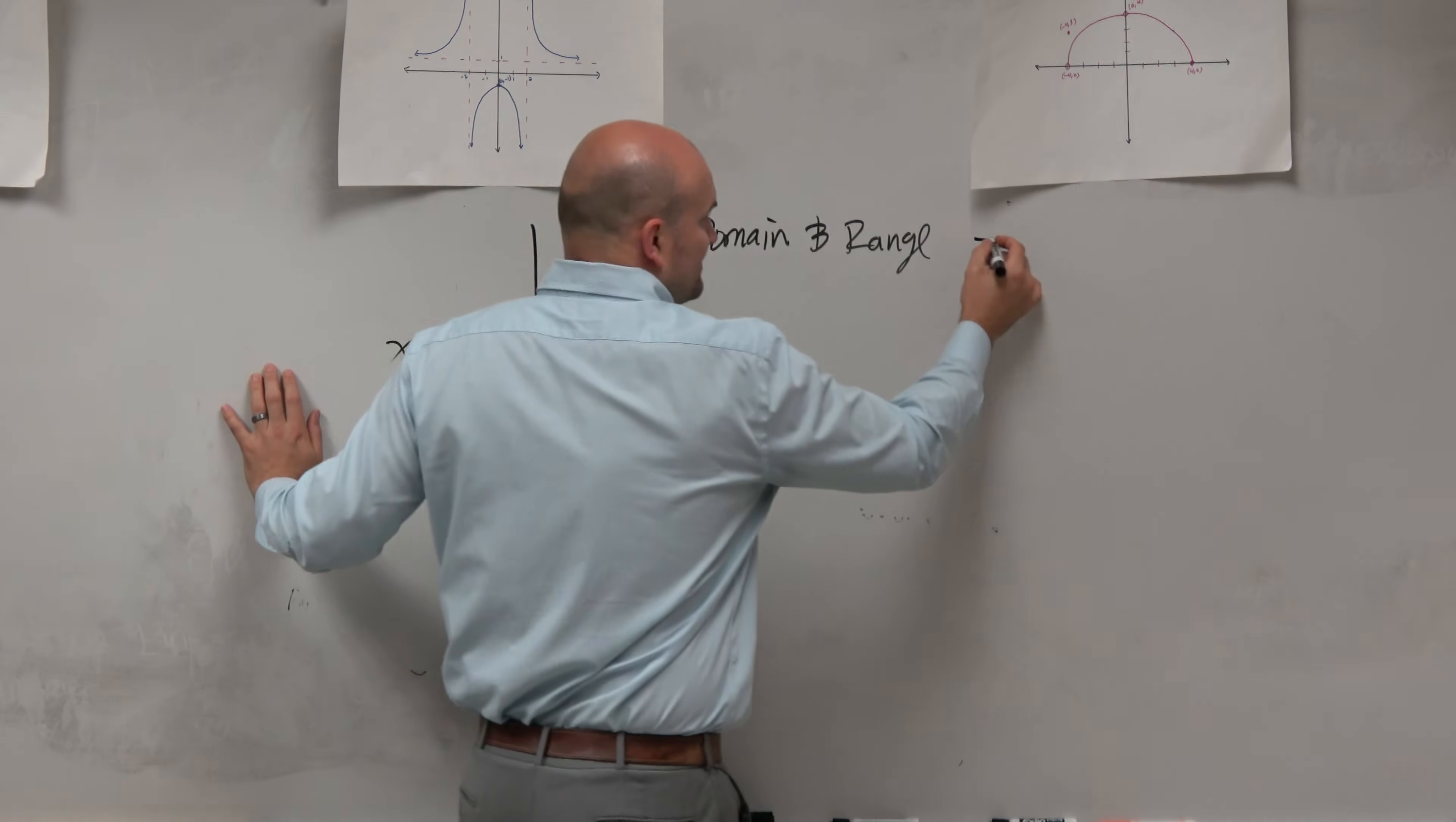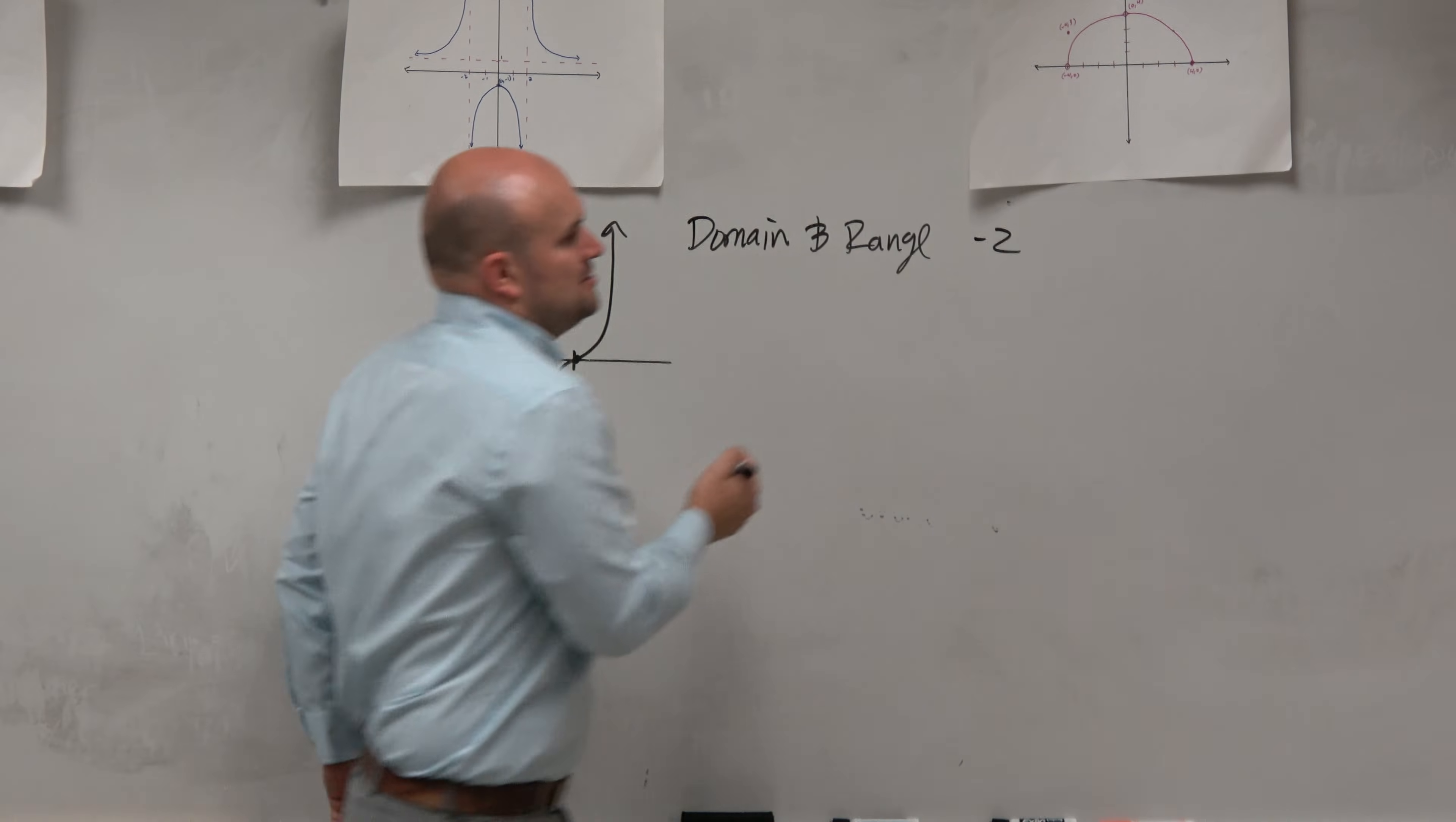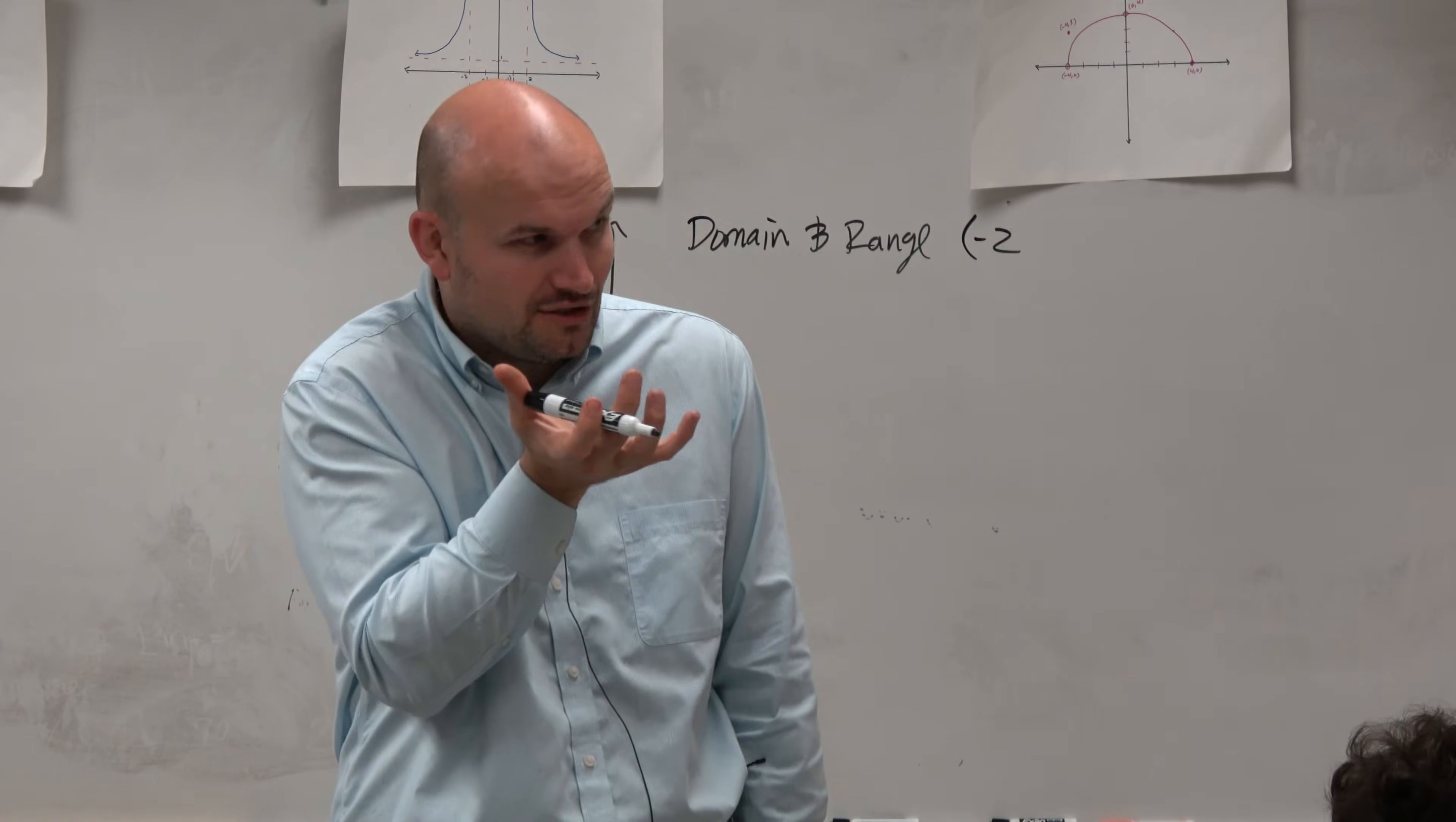You can see it goes as far left as negative 2, but the actual x value of negative 2 is undefined for x because it's a hole. So therefore, we're going to use a parentheses to say that it goes up to negative 2, but negative 2 is not included.